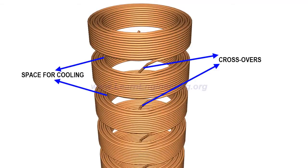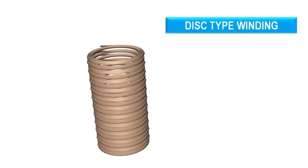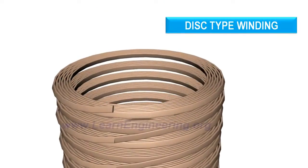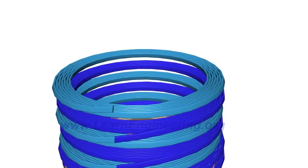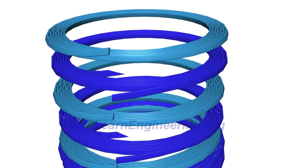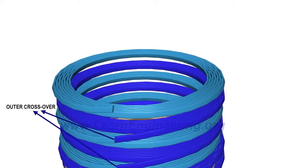Disc type windings are used in transformers with a high power rating. Here, discs are made from spiraling conductors at the same place. Such alternating discs are connected in series using inner and outer crossovers.